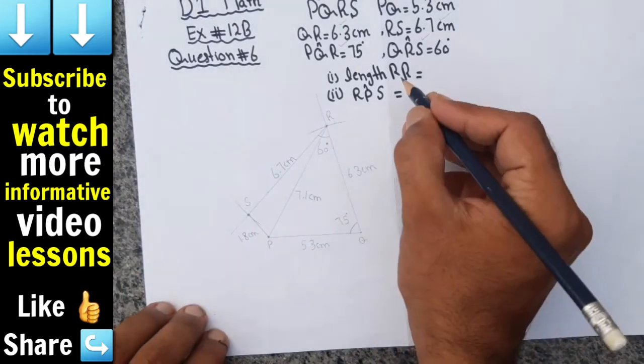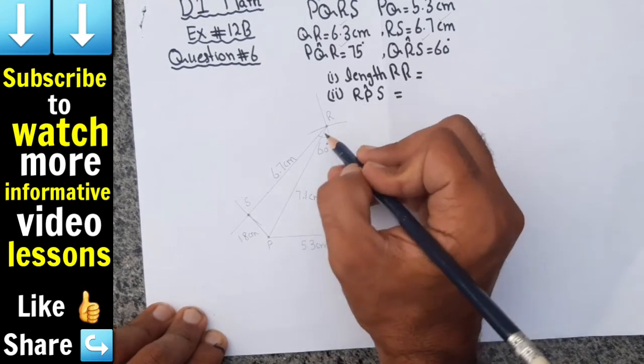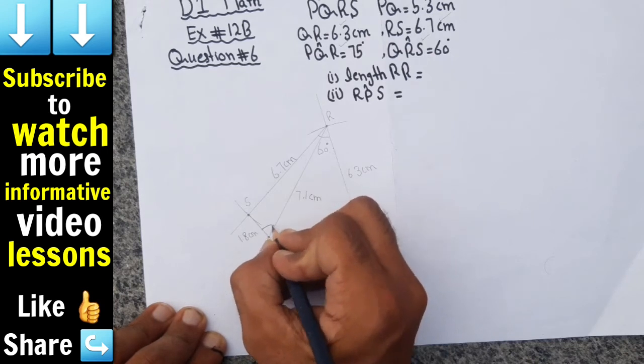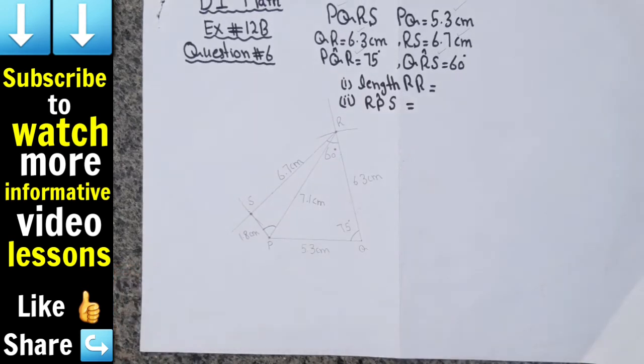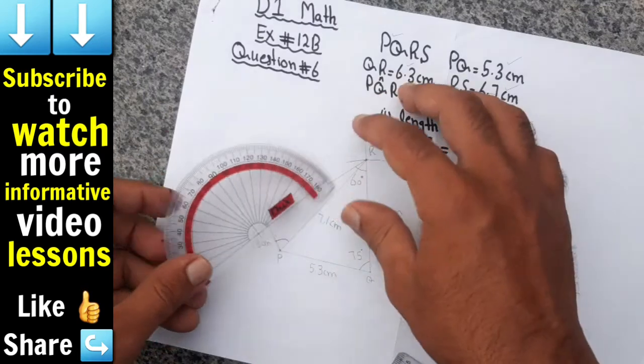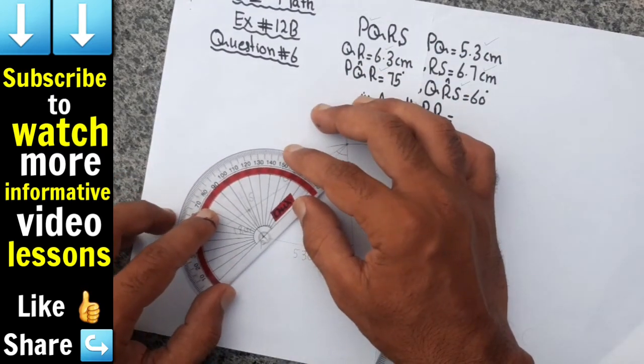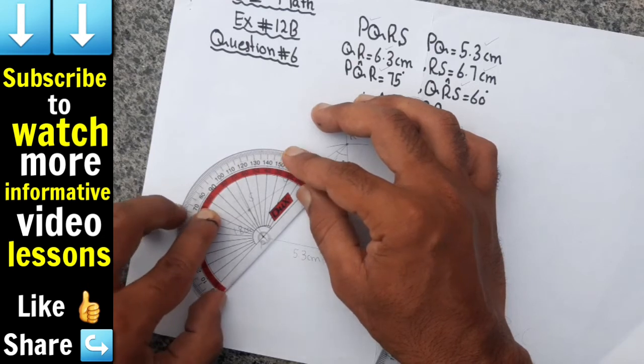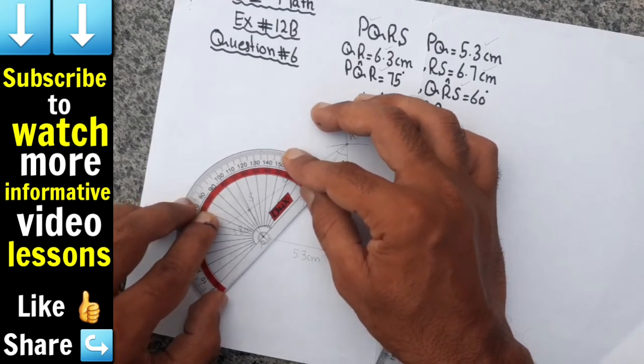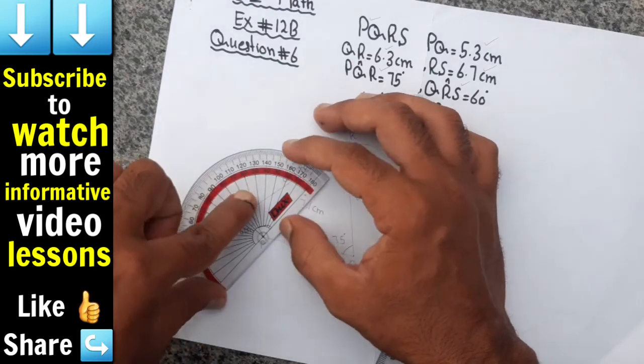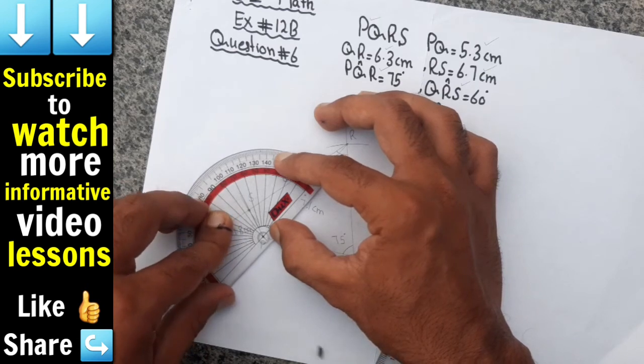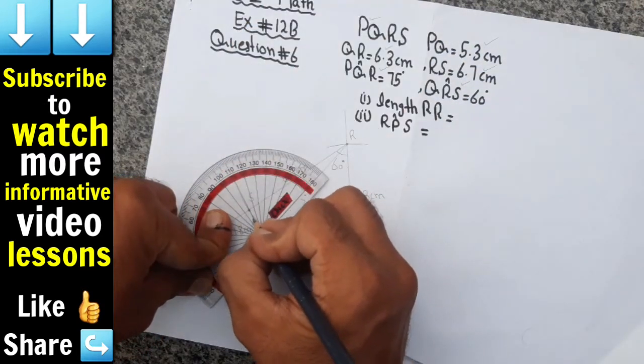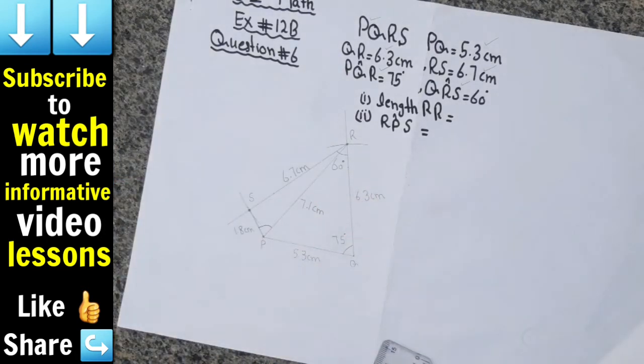Now we will measure the angle RPS. We have to measure the angle RPS, so we will start with R, then P point, and then S. We will place the protractor at this point P. This angle is 70 degrees. The angle at this point is 70 degrees.